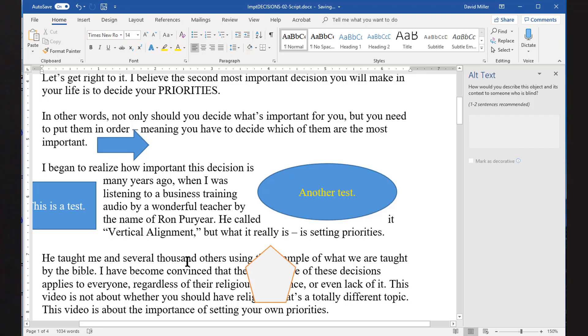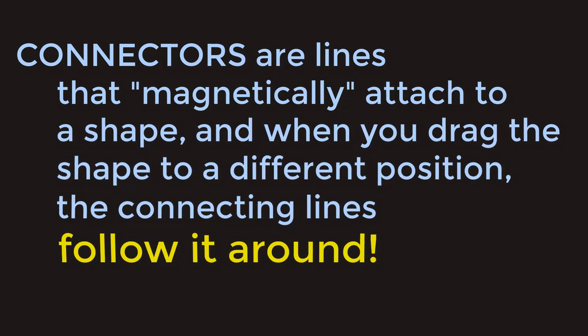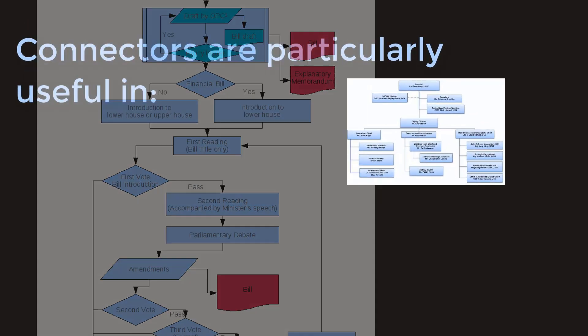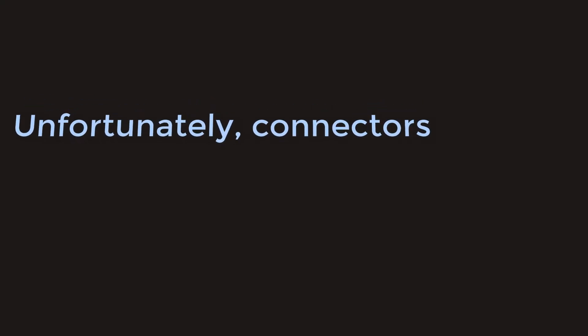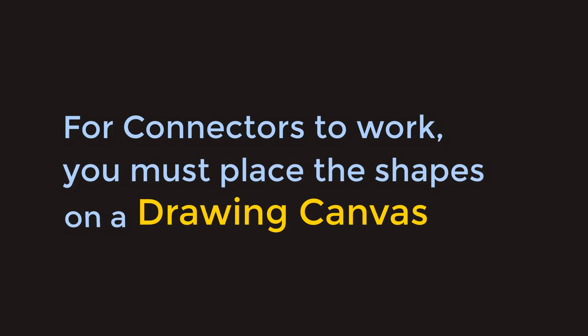All of this works great when you are embedding shapes directly into your document. However, if you want to add connectors to those shapes, you need to do things a little bit differently. Connectors are lines that magnetically attach to a shape, and when you drag the shape to a different position, the connecting lines follow them around. Connectors are particularly useful in diagrams such as flowcharts or personnel trees. Unfortunately, connectors don't work if you try to use them directly in a Word document — for connectors to work, you need to put them into a drawing canvas.